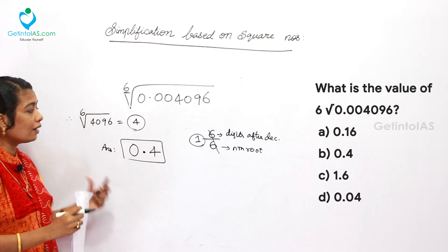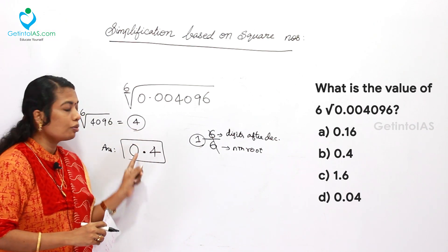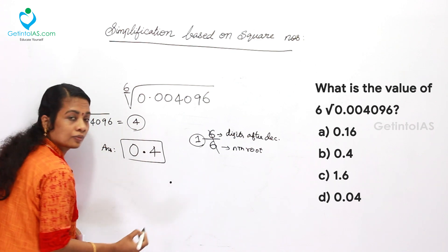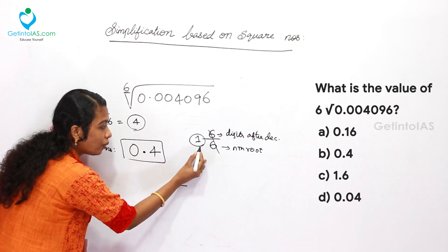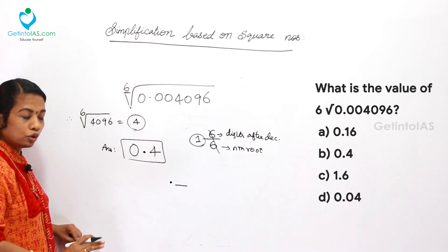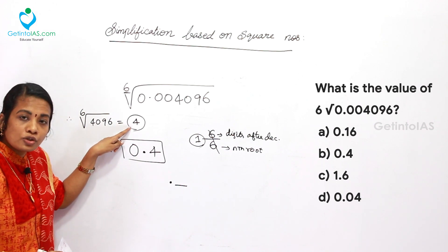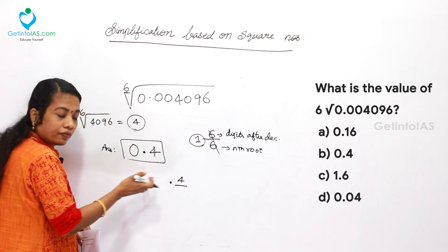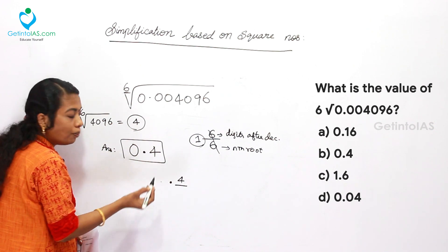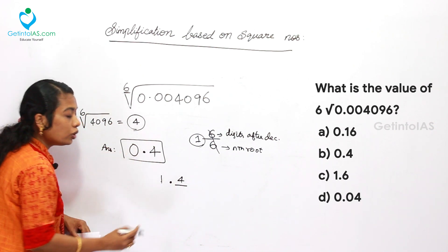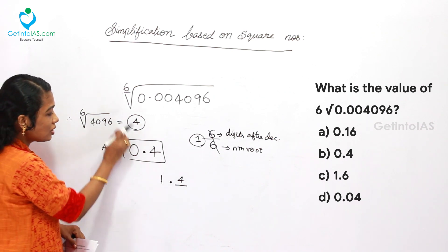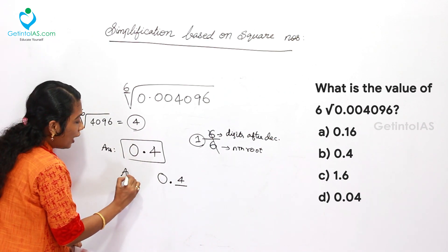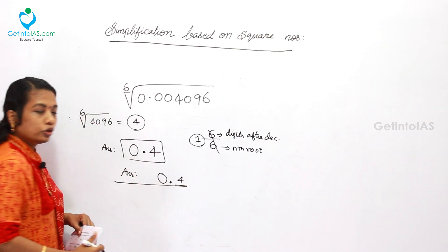Another way to verify: if you are still confused about how 4 became 0.4, you can place the decimal point and allot only one place. How many number digits do you have here? That number is written from the right end. Since there is no whole number part, the result is 0.4. That is the answer.